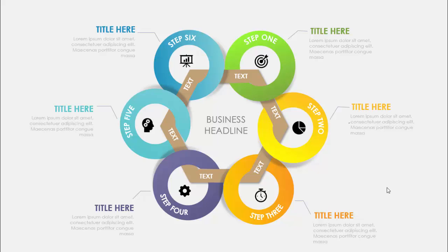In today's tutorial I'm going to show you how to create this hexagon with six circles infographic slide in PowerPoint. I've created this hexagon shape and then added six circles. You can put step one along with the icon and its shadow, and then add your title and detail text. You can do different colors for steps two, three, four, five, and six.